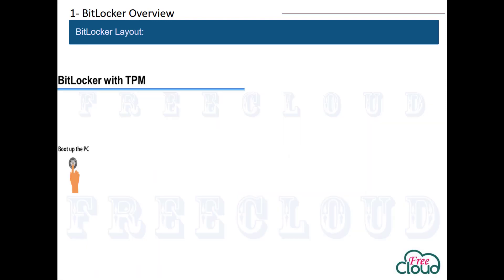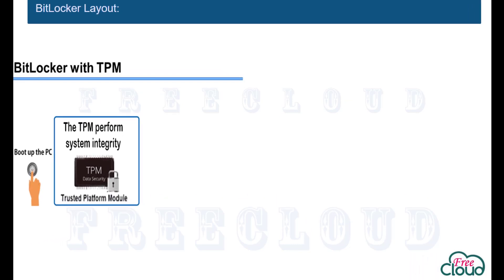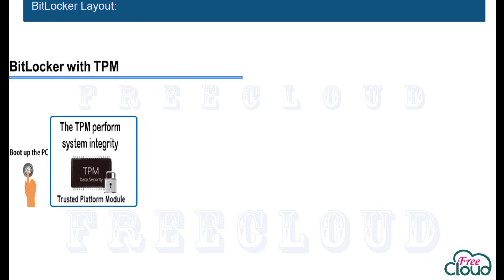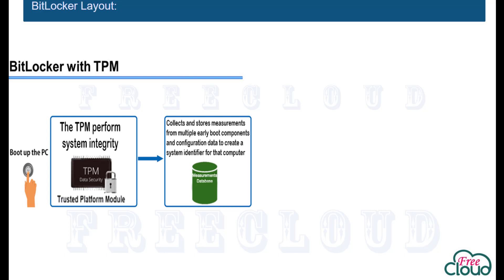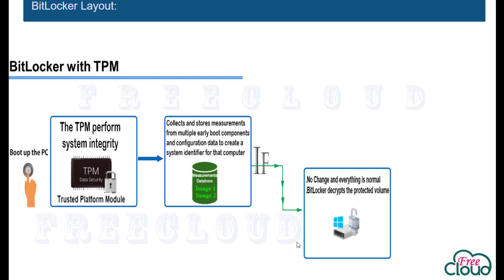Each time you start your system, the TPM will perform system integrity checks at a high level on critical early-boot components like boot configuration data, BIOS, fingerprint, and hard disk. The TPM collects and stores measurements from multiple early-boot components and boot configuration data to create a system identifier for that computer, storing each part as a hash in a platform configuration registry. If the TPM verifies system integrity with no changes and everything is normal, the TPM will supply a unique cryptographic key and BitLocker will decrypt the protected volume.